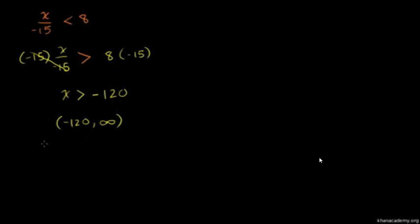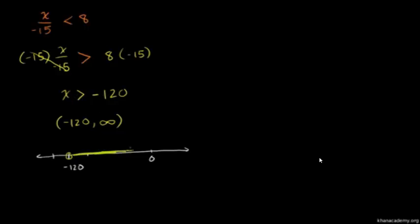If we graph it on a number line, negative 120 is our reference point — maybe negative 121 to the left and negative 119 to the right. We don't include negative 120, so we use an open dot, and shade everything greater than negative 120. You can verify: zero over negative 15 is zero, which is definitely less than 8, so zero works.